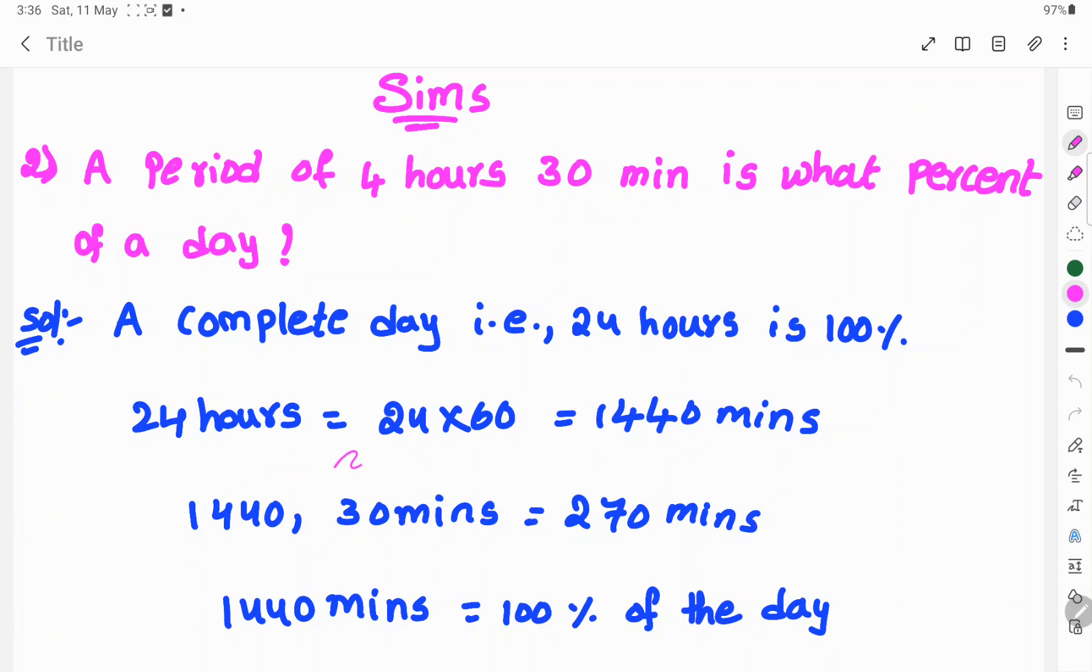24 hours is equal to 24 into 60 minutes. 24 hours into 60 minutes, that implies 1440 minutes.